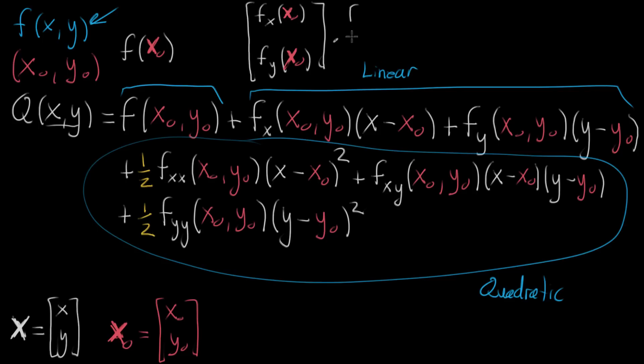So this looks like taking the dot product. We're taking it with x minus x naught and y minus y naught. This is just expressing the same linear term but as a dot product.